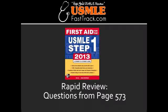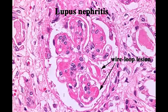What lab or diagnostic finding is observed in lupus nephropathy? In lupus nephropathy, you would see wire-loop glomerular capillary appearance on light microscopy.